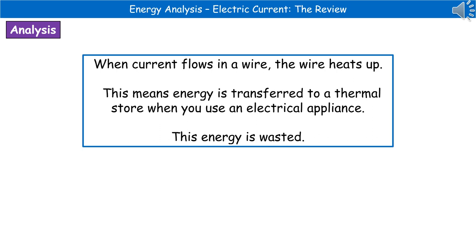One thing we need to bear in mind when talking about electrical appliances is that when current flows in a wire, the wire heats up. So we're transferring energy to a thermal store whenever we use any electrical appliance. This means we are always wasting some energy — whatever energy is transferred to the thermal store as a result of the wire heating up is wasted, as it's not going into the intended use of the appliance.